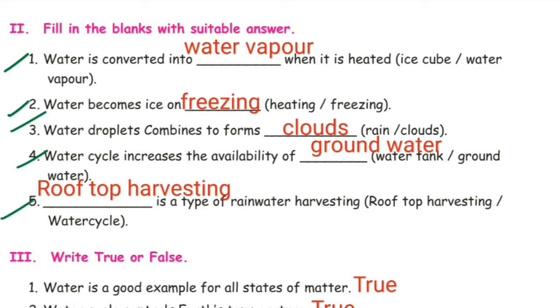Question 5: dash is a type of rainwater harvesting. Answer: rooftop harvesting. Rooftop harvesting means collecting rainwater from the rooftop.